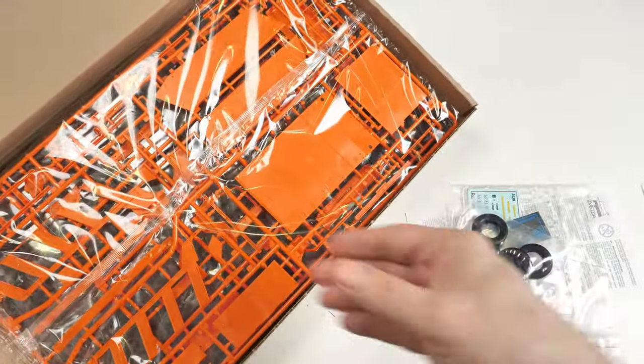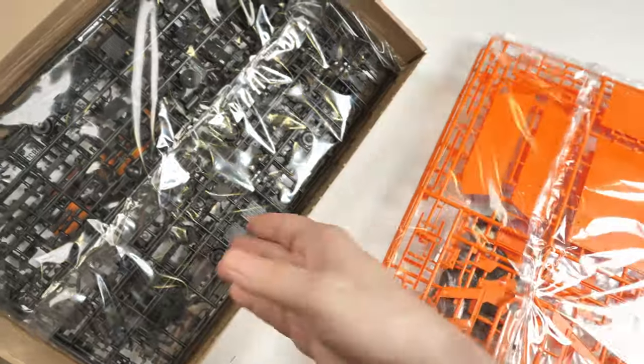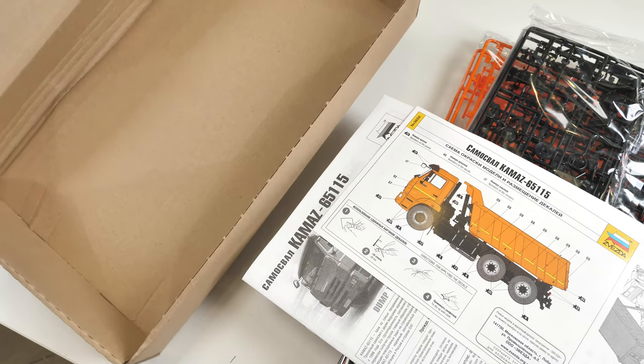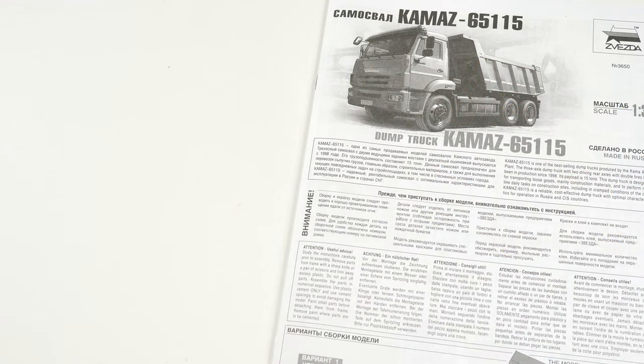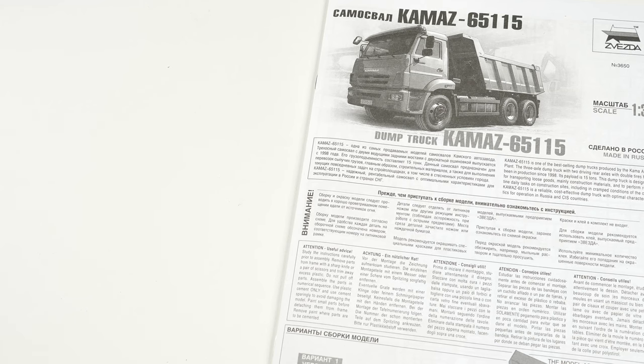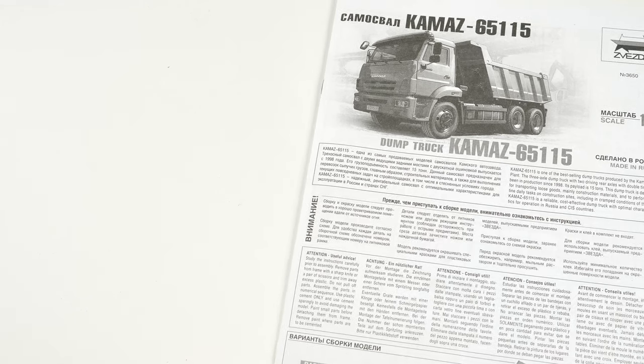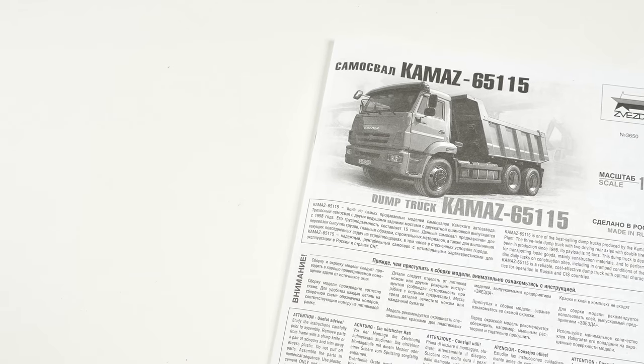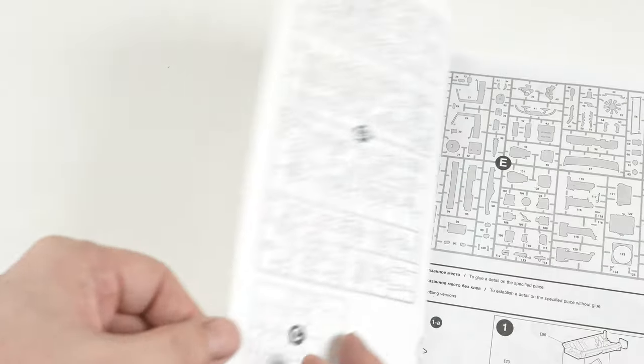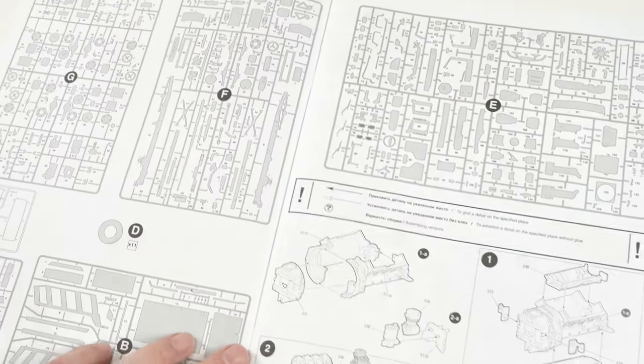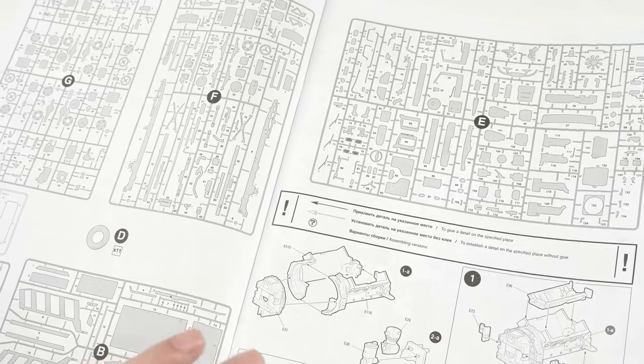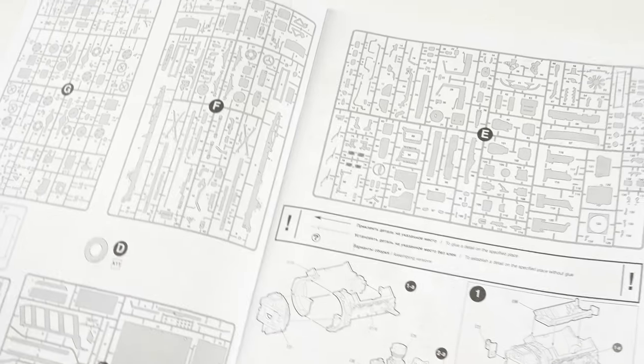Some blurb, one bag there, another bag there, big bag of sprues, another big bag of sprues. Instructions and a paint callout. Just a quick point to note, I have built the previous version of a military KAMAZ. Check my channel for the build of that. However, I'm interested in your feedback as well. Do you want me to do a full build video on this, or just a paint video?